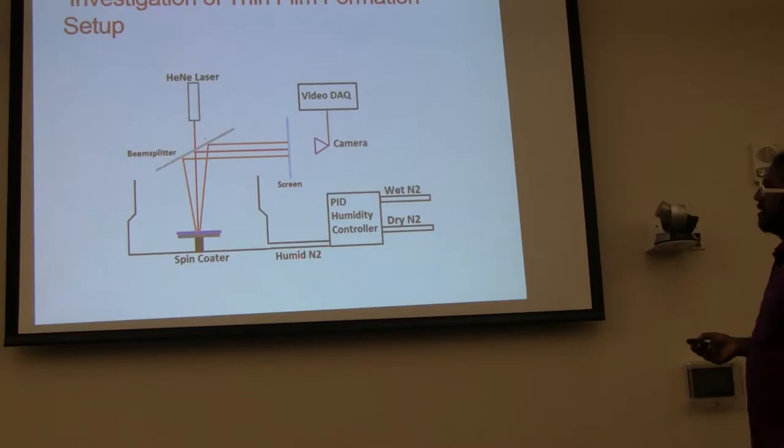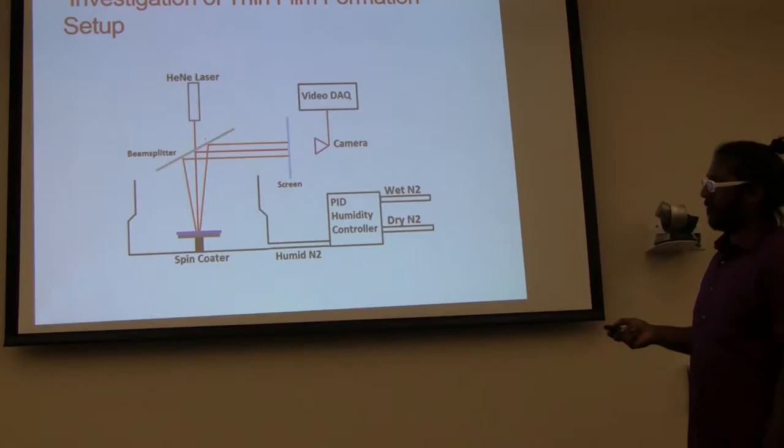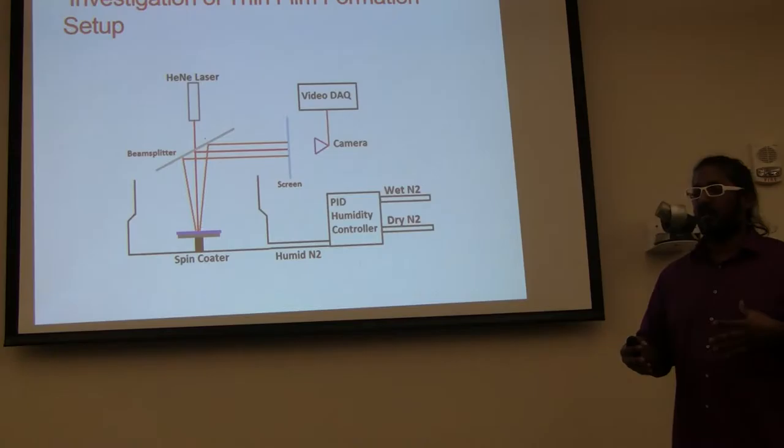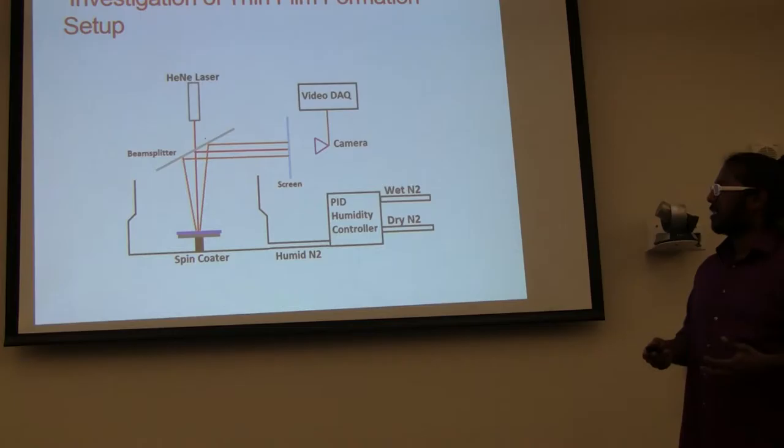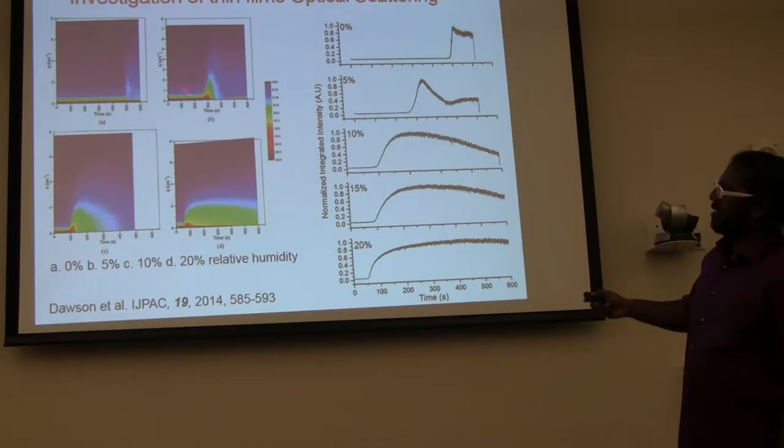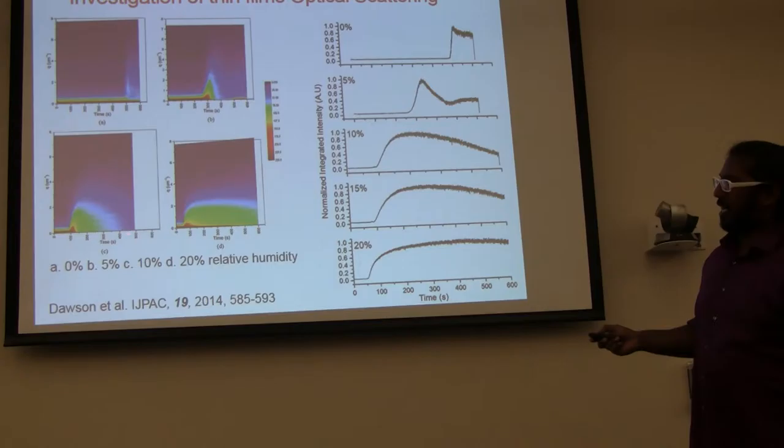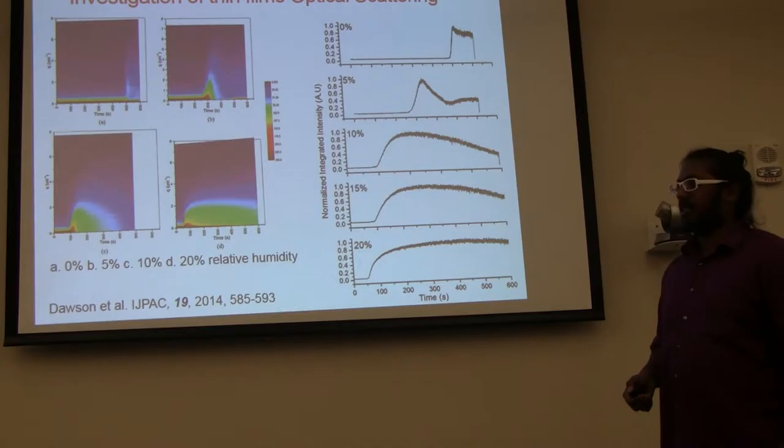So to study a phase separation process, we have to make this setup. This is a spin coater. We can control how fast this spins. And then we can control the humidity in this chamber by using a homemade humidity controller. And then we have a laser that bounces off the surface. If you study how the laser reflects from the surface, you can get an idea of how these separate regions will develop over time. That's what we wanted to investigate.